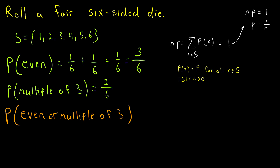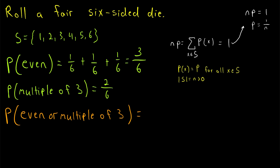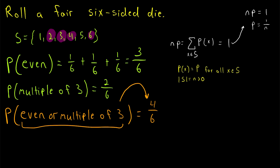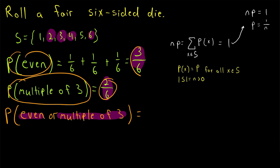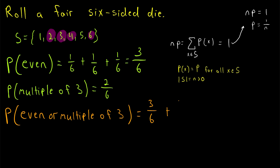We can get a bit more complicated with an example: what's the probability that we roll a number that's even or a multiple of 3? Using the same strategy, we count the numbers that are even or multiples of 3, which are 2, 3, 4, and 6 — a total of 4 possibilities — divided by 6 possible outcomes, giving a probability of 4 over 6. But you might have been tempted to solve this by adding the probabilities: 3 over 6 plus 2 over 6, which is 5 over 6 — not equal to 4 over 6.